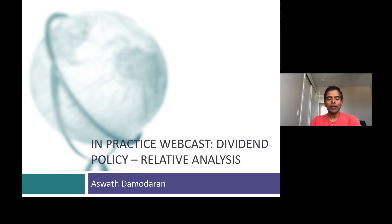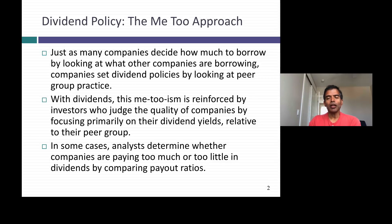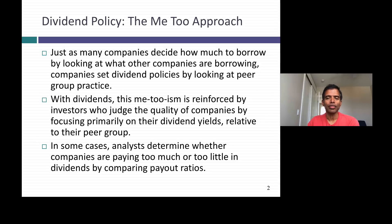Welcome back. In this session I'd like to talk about how most companies set dividends. Most companies set dividends very much like they decide how much to borrow — they look at what everybody else in the sector is doing and try to do the same thing. Similarly with dividend policy, they look at how much other companies pay in dividends and decide based on that practice. That might not strike you as a sensible way of running a business, but unfortunately it's how dividend policy is set at most companies.